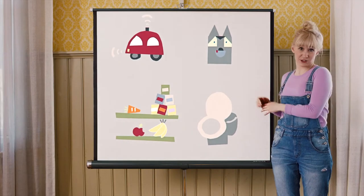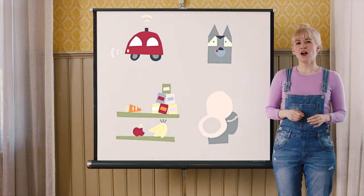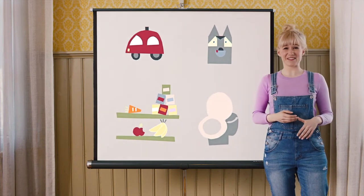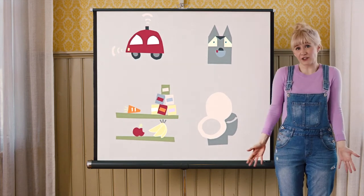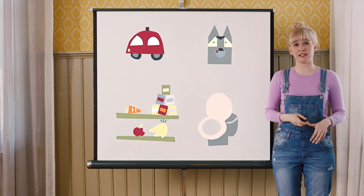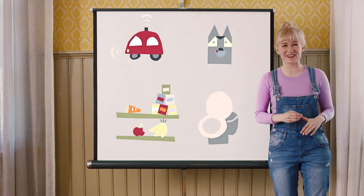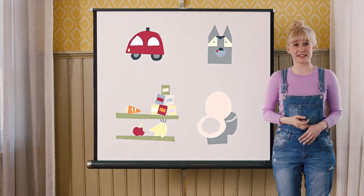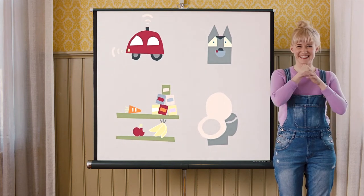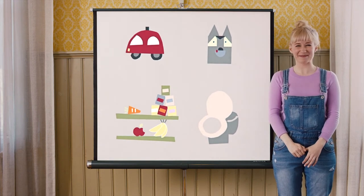Which one of these do you think is a computer? A car is a computer — it has a navigation system inside of it. A dog might not be a computer, but it has a collar, and the collar might have a computer inside of it. Grocery stores have so many different kinds of computers inside of them, like the cashier system and the burglar alarm. And in Japan, toilets are computers, and there are even hackers who hack them.